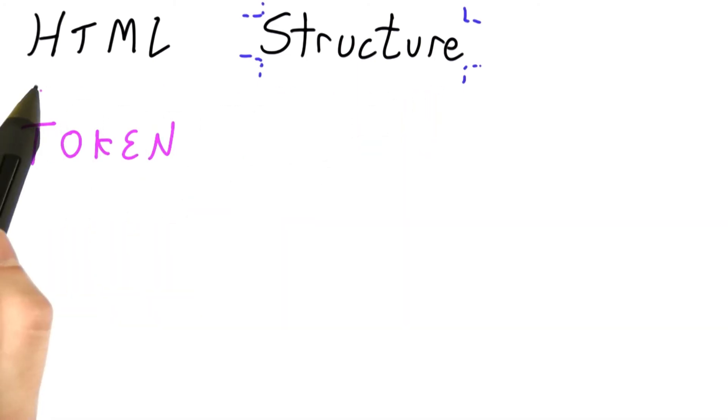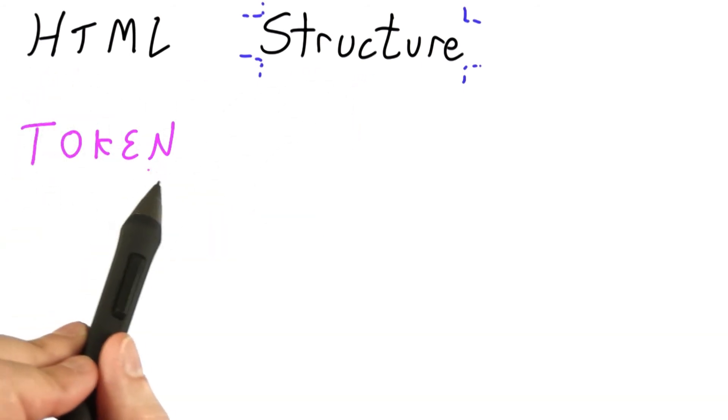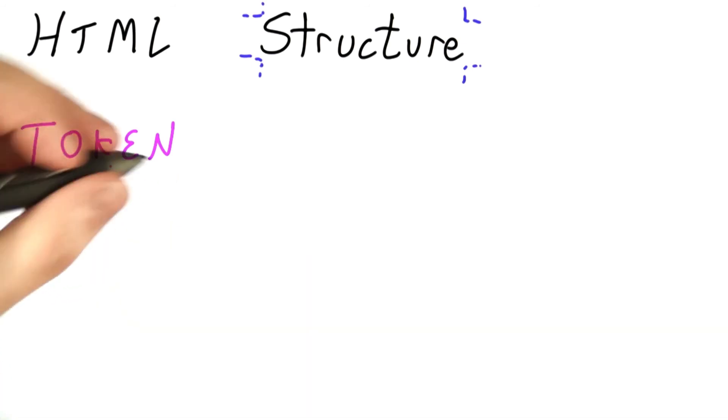Since HTML is structured, we're going to want to break it up into words and punctuation and word-like elements. And we use the special term token to mean all of those.